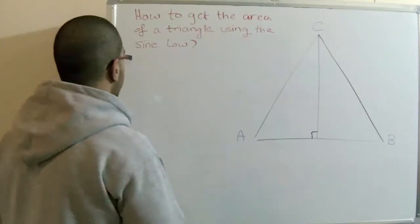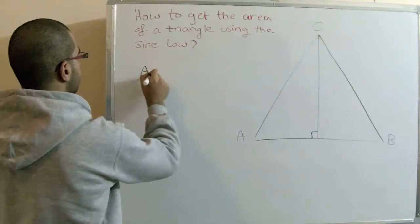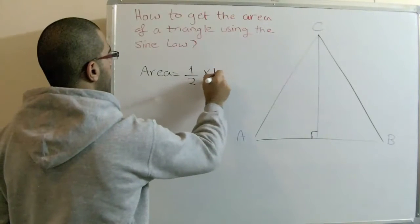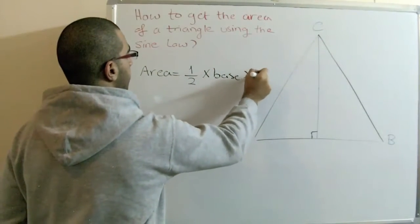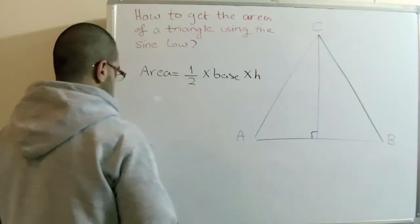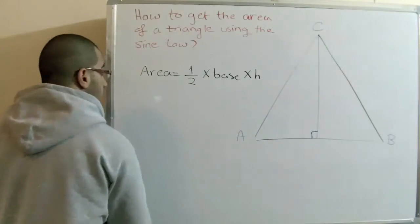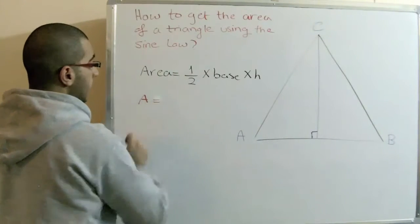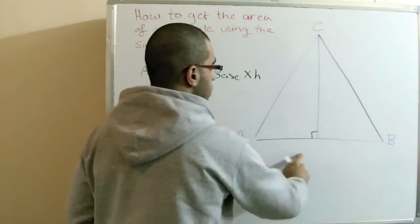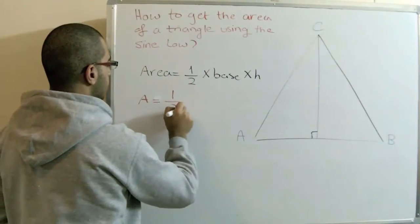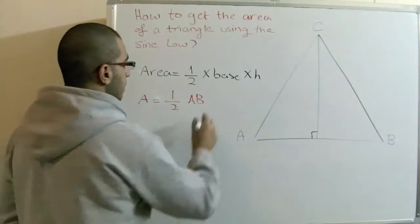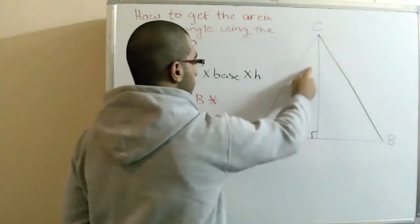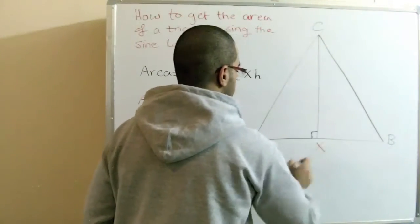We already know that the area of a triangle equals half of the base multiplied by the perpendicular height. If we apply this rule to the triangle we have here, the area will equal half of the base, which is AB, multiplied by the height, which is CX.